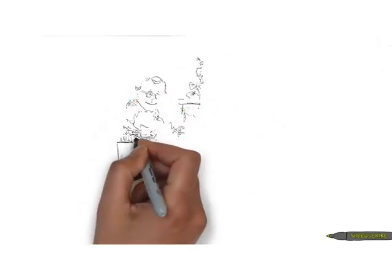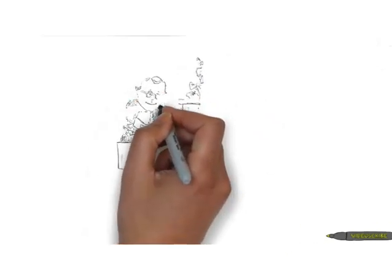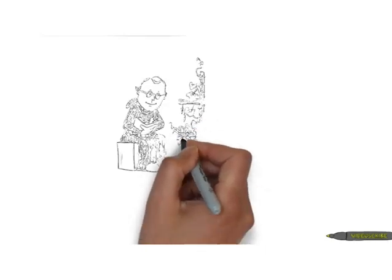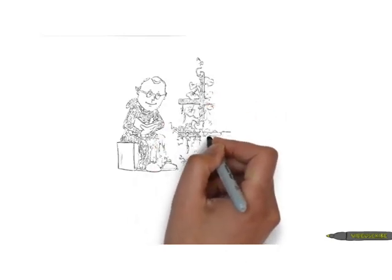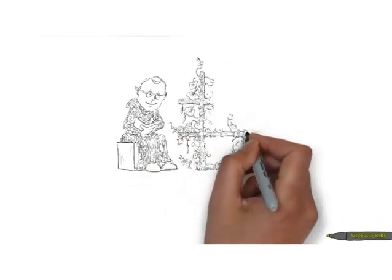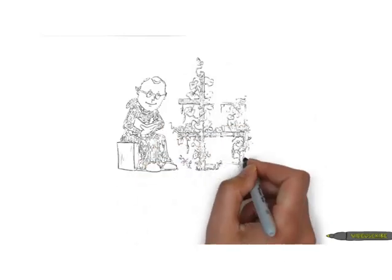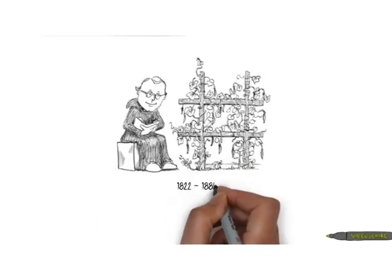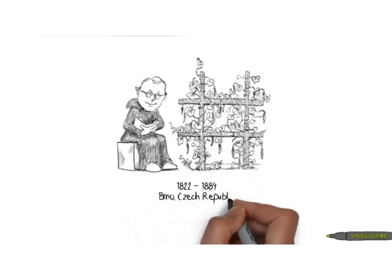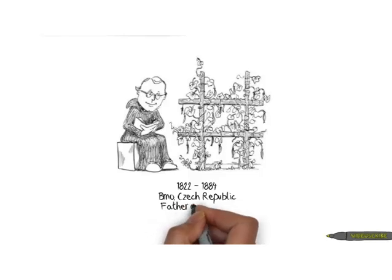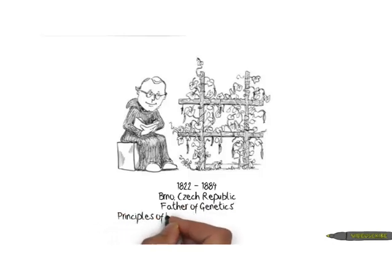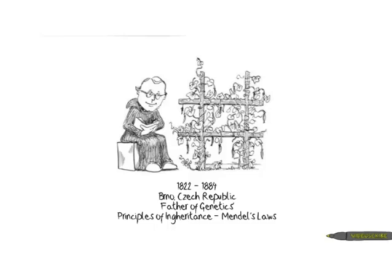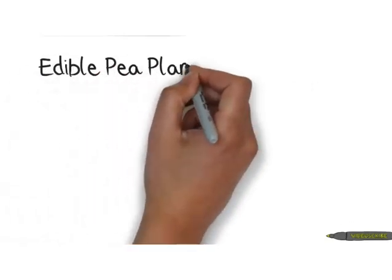In this presentation we're going to look at Gregor Mendel, an Augustinian monk who lived in a monastery in an area now known as Brno in the Czech Republic. His work was very important in understanding the principles of inheritance, and they're now called Mendel's Laws. He is termed the father of genetics.